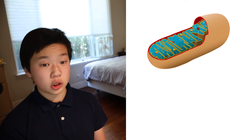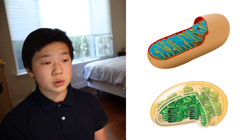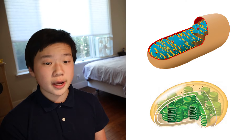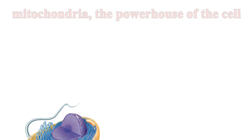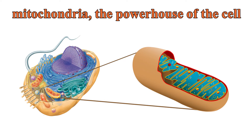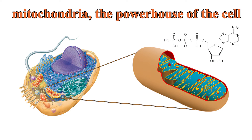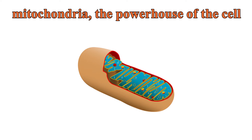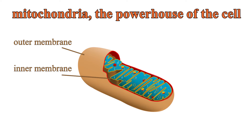Let's talk about mitochondria and chloroplasts. These organelles are responsible for transforming energy into different forms. Mitochondria convert stored energy in the form of sugars and fats into ATP, a molecule that the cell can harness energy from directly. This process is called cellular respiration. The mitochondrion is enclosed by two membranes — a smooth outer membrane and a convoluted folded inner membrane. These folds in the inner membrane are called cristae.